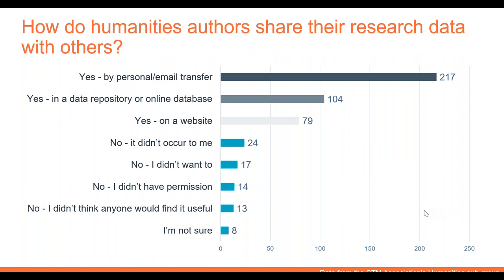Also interesting, from the same survey, we asked how these humanities authors had shared their research data with others, if they had done so. The large majority had shared data by personal or email transfer, and then less than half as many had shared data in a data repository, with slightly fewer sharing on a website. So there's quite a lot of activity happening in terms of humanities data sharing, although it's not necessarily in the form we would consider to be best practice. We would ideally like to increase the number of humanities authors using data repositories and decrease sharing by email.